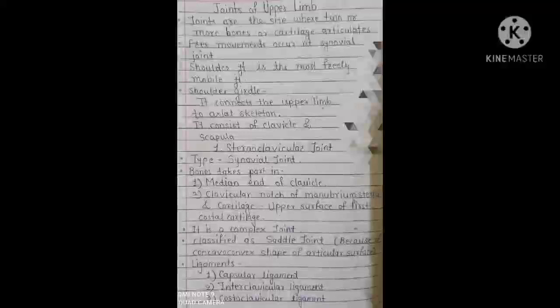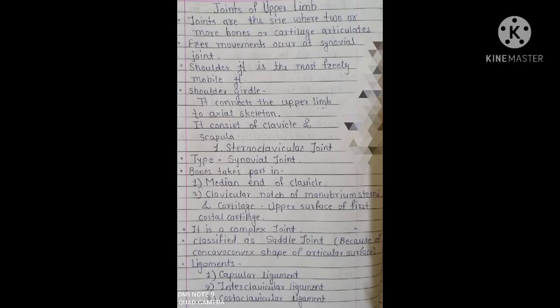Welcome to the homeosource. Today we are going to learn about the joints of the upper limb. Joints are the sites where two or more bones or cartilage articulate. Free movements occur at the synovial joint. The shoulder joint is the most freely movable joint in our body. The shoulder girdle connects the upper limb to the axial skeleton and consists of the clavicle and the scapula.